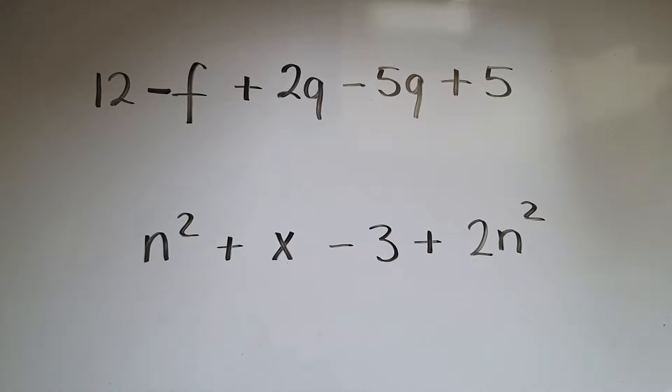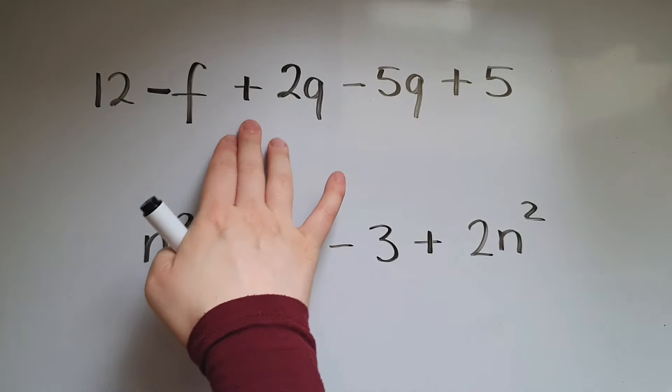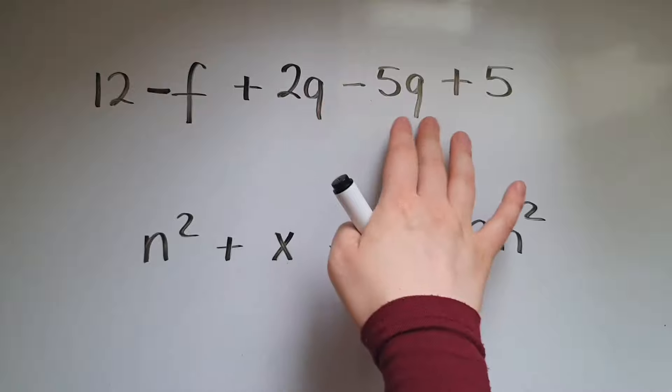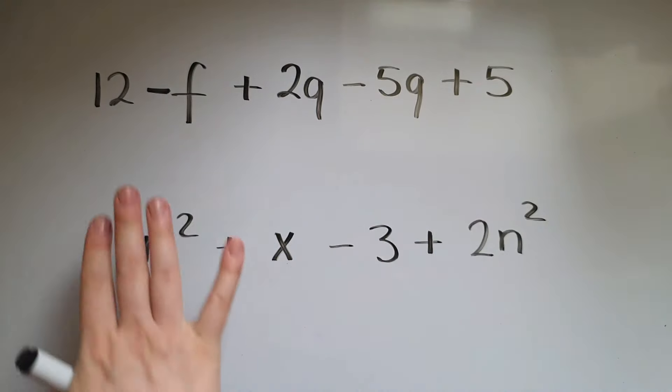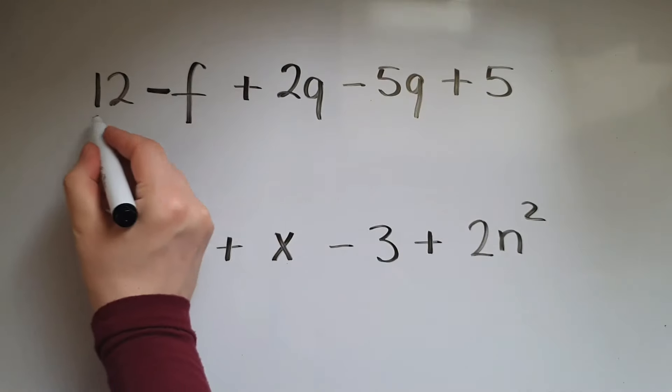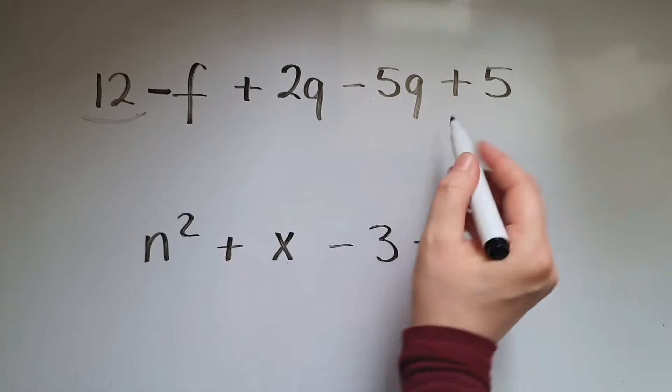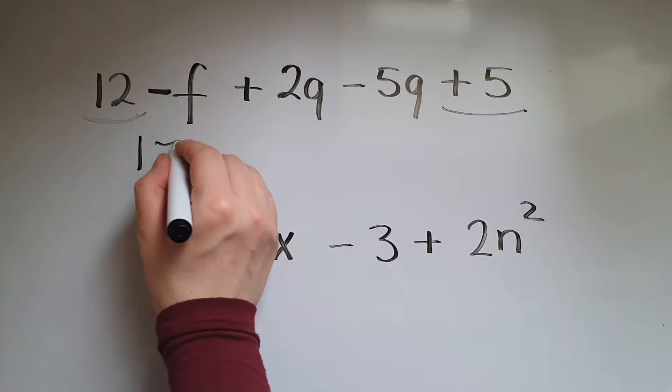So looking at this one, we've got 12 take away f plus two q take away five q plus five. So 12 add five gives us 17.